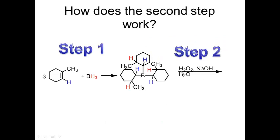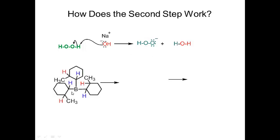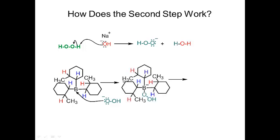The second step is the oxidation part. I'll show one oxidation where one alkyl borane gets converted into an alcohol. First, sodium hydroxide comes in and deprotonates the peroxide, giving a peroxy anion — this is the source of OH. The peroxy anion then attacks the boron. Now boron has a negative charge because it has four things attached to it — you can calculate the formal charge to verify.